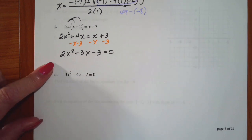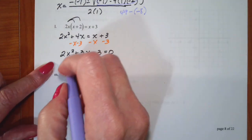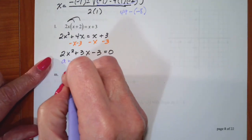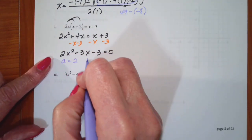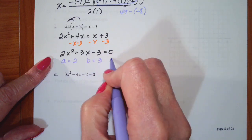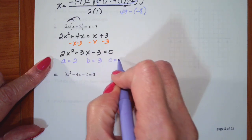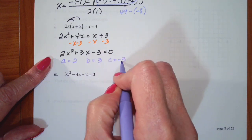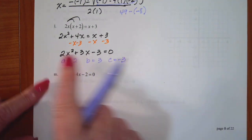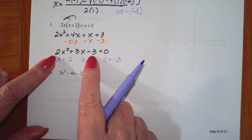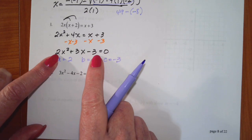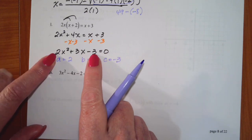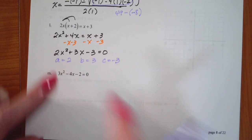From here I want to identify my a, b, and c. So a is 2, b is 3, and c is negative 3. The reason I did that is because if I multiply 2 times negative 3, I get negative 6. There are no product pairs of negative 6 that add to equal 3.